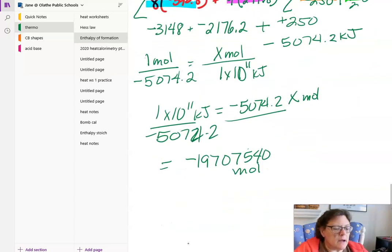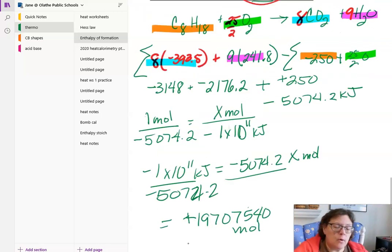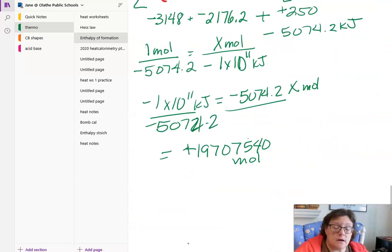That seems like a big amount. It is. But it wouldn't be negative. Because this would also be negative, so the negatives would cancel each other out. Now, the question was grams of octane. How do you convert moles to grams?